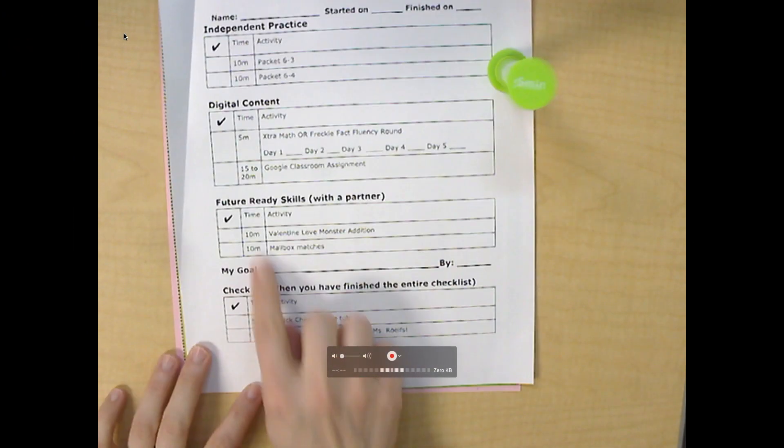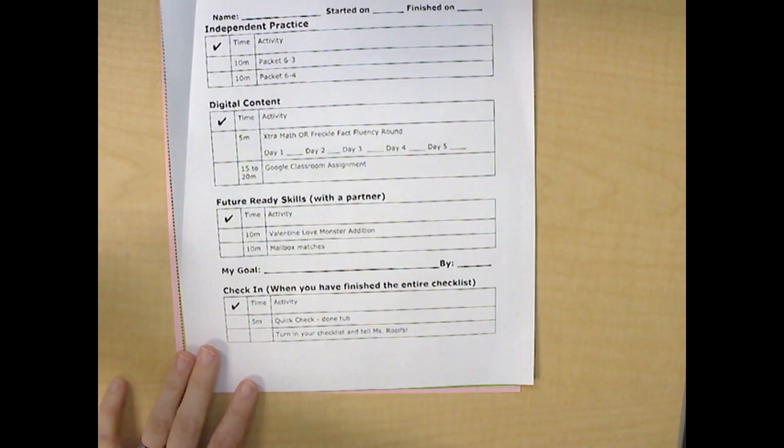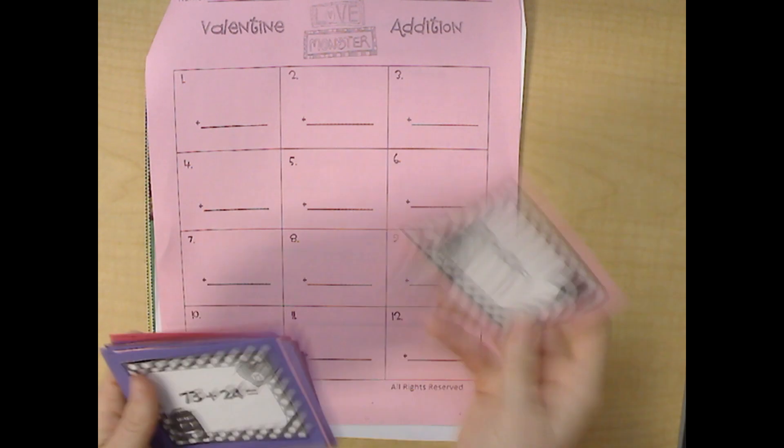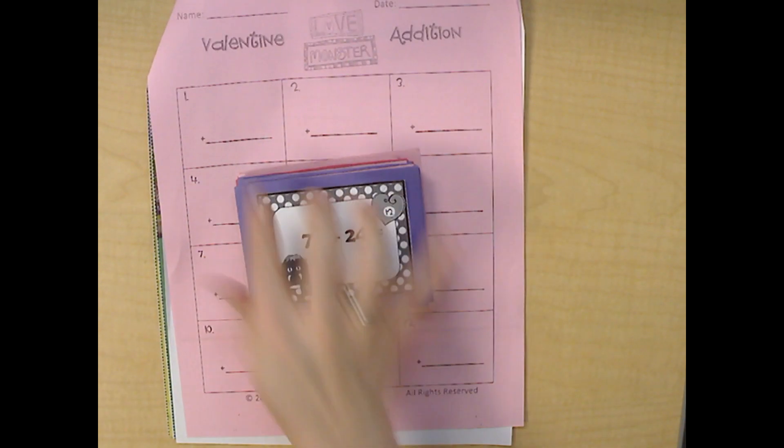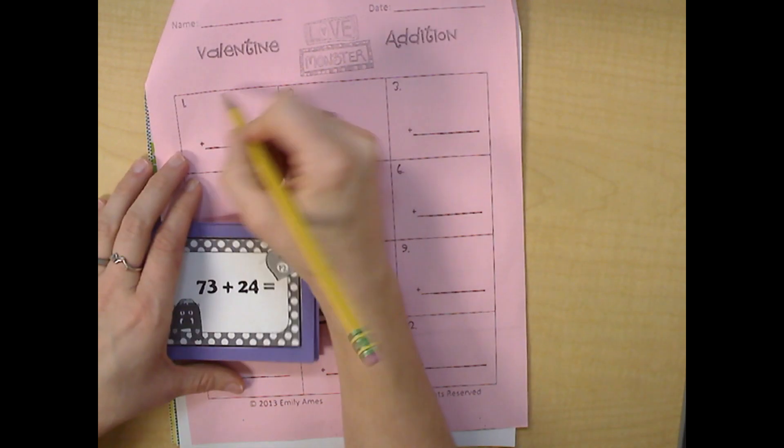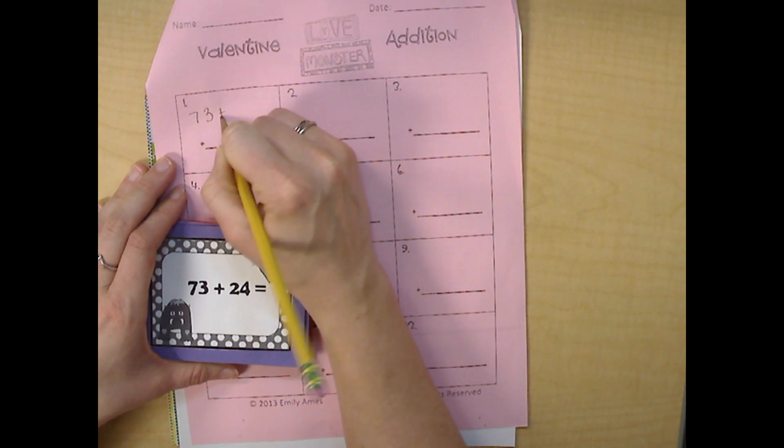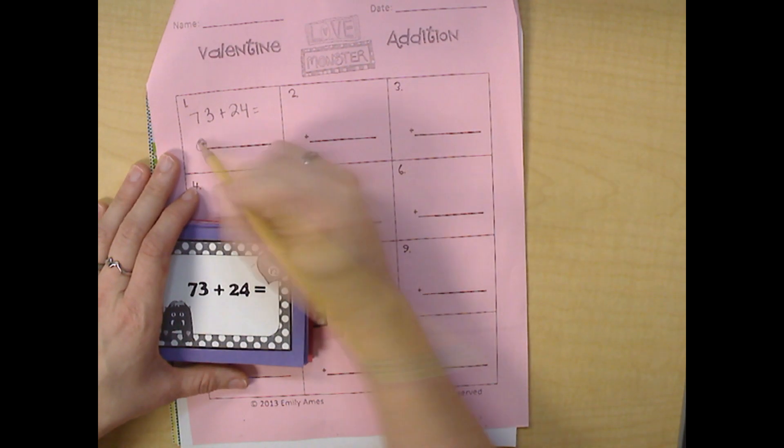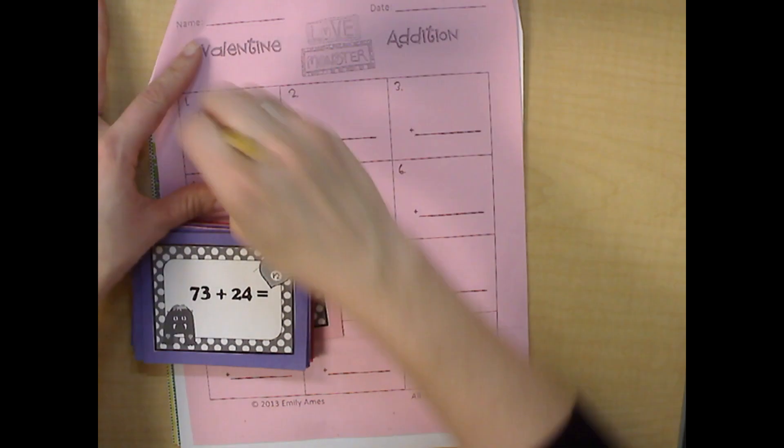The next activity you have is Valentine Love Monster Edition. You need to use the recording sheet that is in the back of your packet. Some of you might have a white page, and some of you might have a pink page. They're both the same. What you do is you get the cards that look like this. You and a partner are going to take turns solving the problems. You write your problems on your page. So, if you have 73 plus 24, you would write 73 plus 24 equals. And then you're going to write your answer here. Don't worry about your addition sign. You can write it this way.